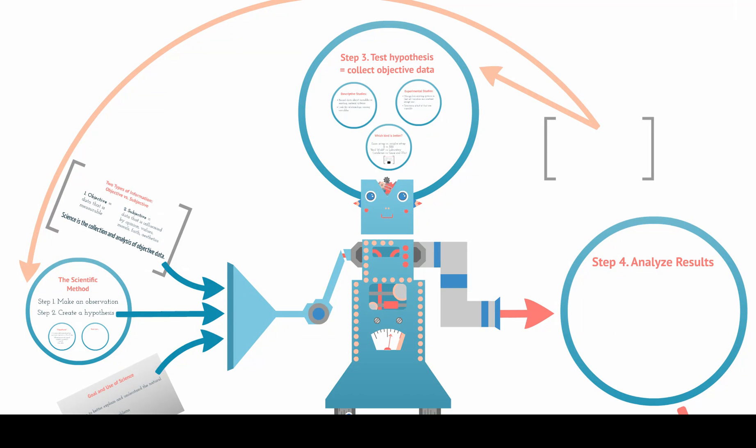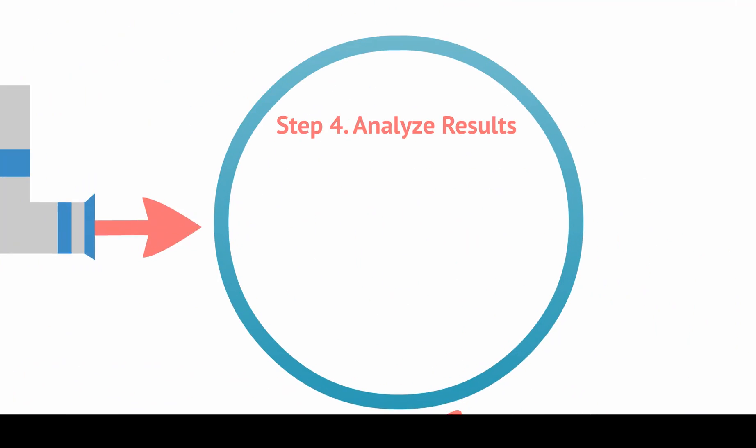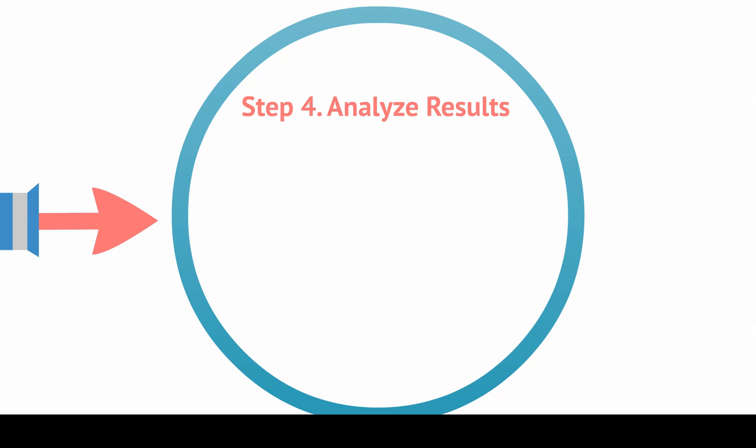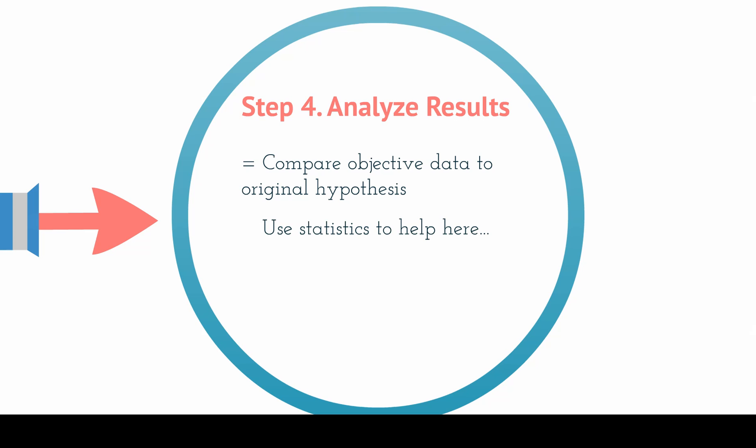Once we've collected some data, our next step is going to be analyzing the results. An analysis is simply comparing your objective data to your original hypothesis. Does the data support your hypothesis or does it refute it? You're going to use statistics to help you here, so you're not just making a conclusion based on feelings or general ideas — statistics help us be objective about our analysis.